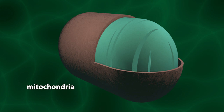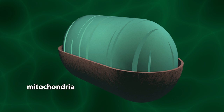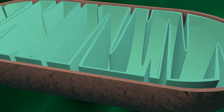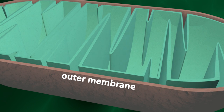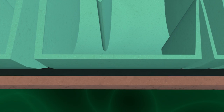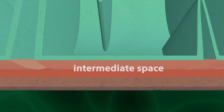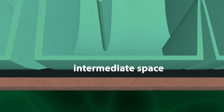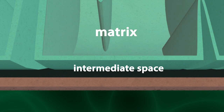Most of the ATP is produced within the mitochondria, which are comprised of an outer and inner membrane. The space between these two membranes is referred to as the intermediate space, while the space surrounded by the inner membrane is known as the matrix. Also, the inner membrane possesses numerous infoldings called cristae, which contain enzymes involved in the production of ATP.